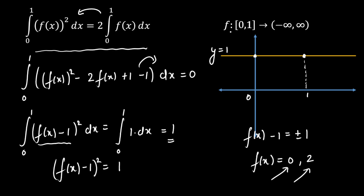We want the number of such continuous functions where the area covered by (f(x) minus 1) whole square from 0 to 1 equals 1. The domain is 0 to 1 and the range is ℝ. Let me draw one function here — something like this. The area covered from 0 to 1 by f(x) minus 1 is 1. More than one function is possible, because if we have positive area and negative area that together total 1, that is also valid. So infinitely many functions are possible from 0 to 1 which give you (f(x) minus 1) whole square equal to 1.